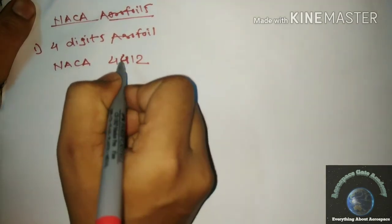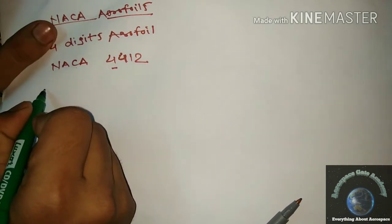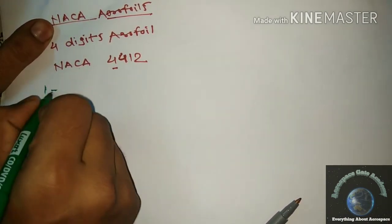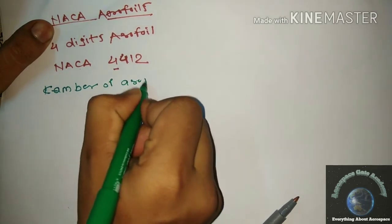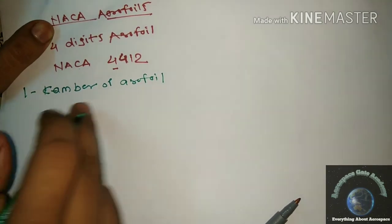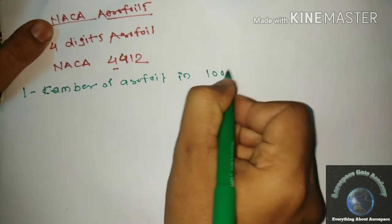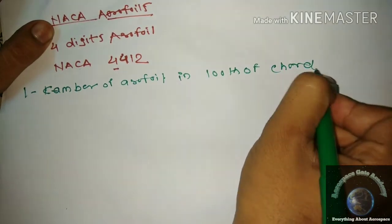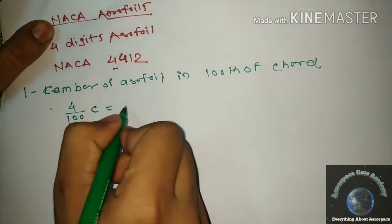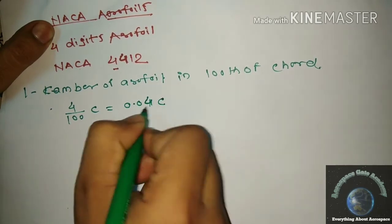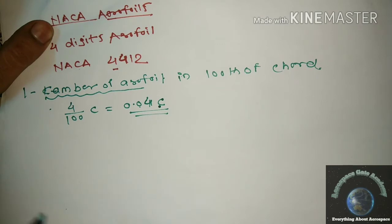Each digit designates something specific. The first digit is the camber of the airfoil, expressed in hundredths of the chord. This means we divide 4 by 100, so the camber of the airfoil will be 0.04C.